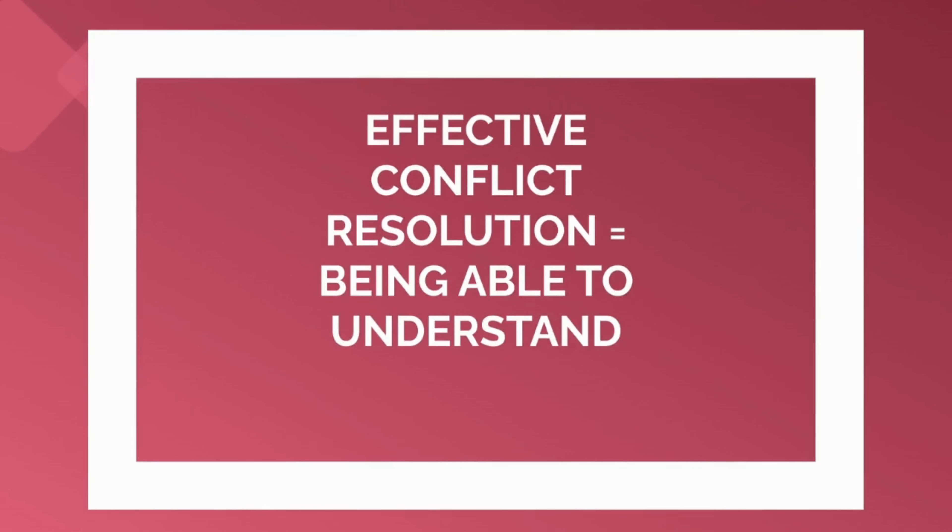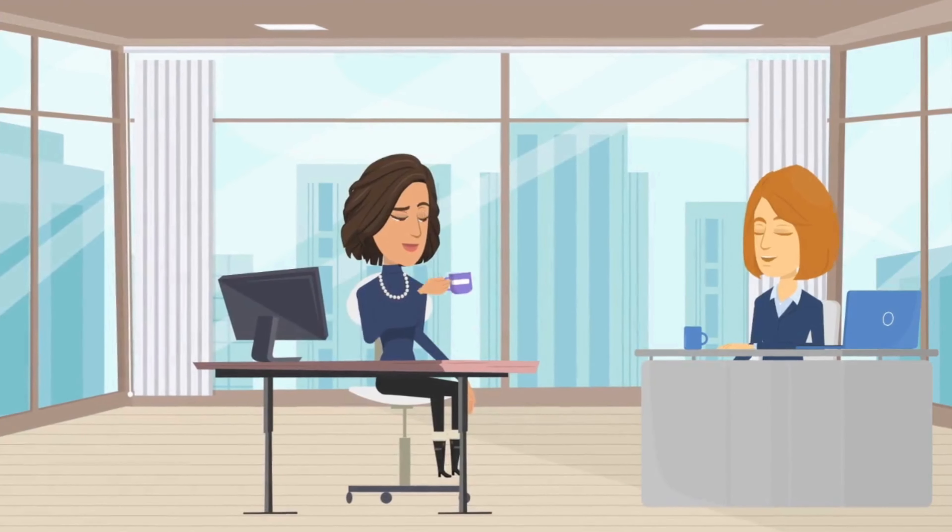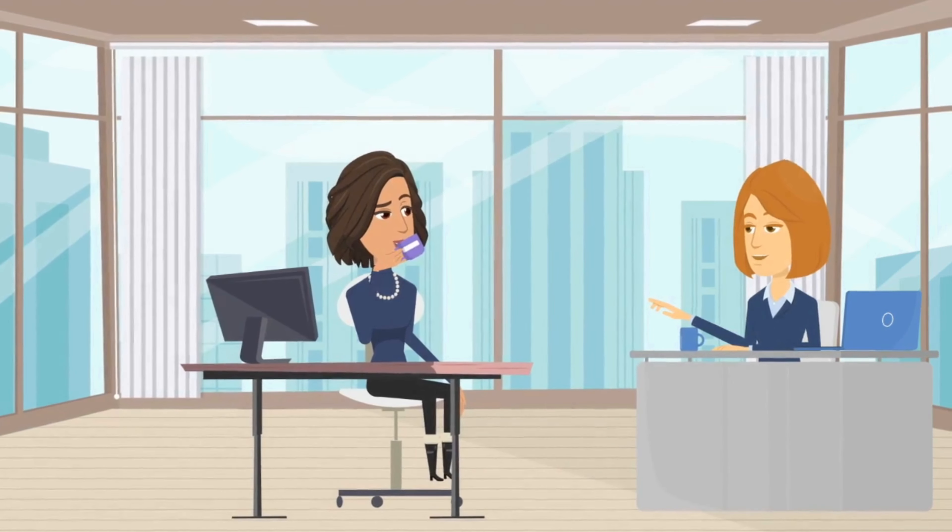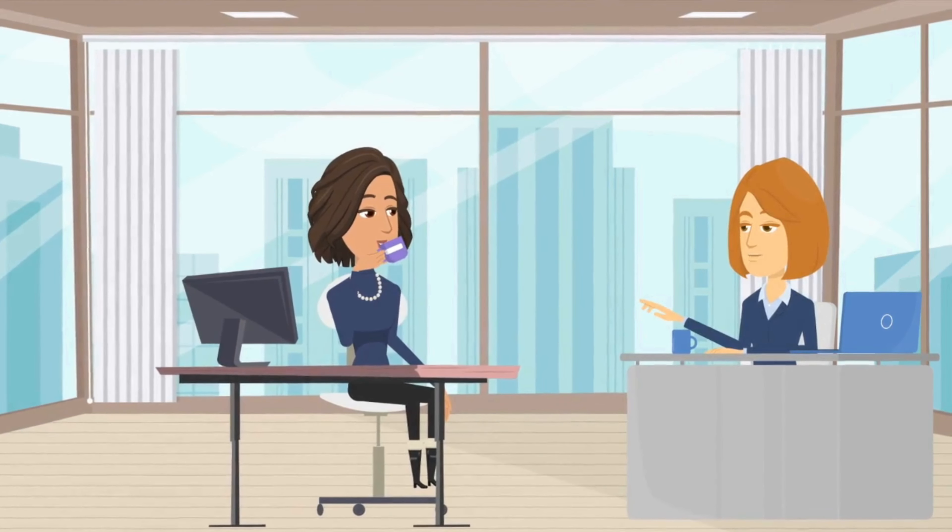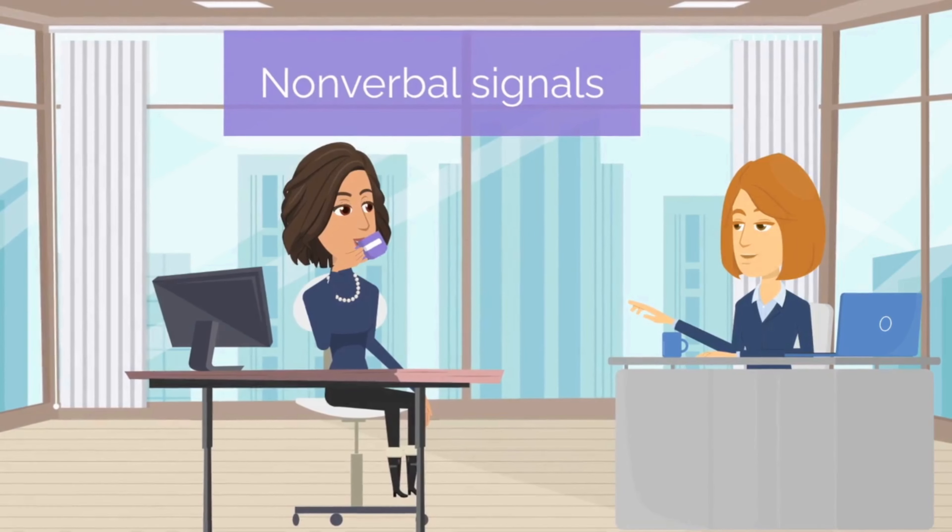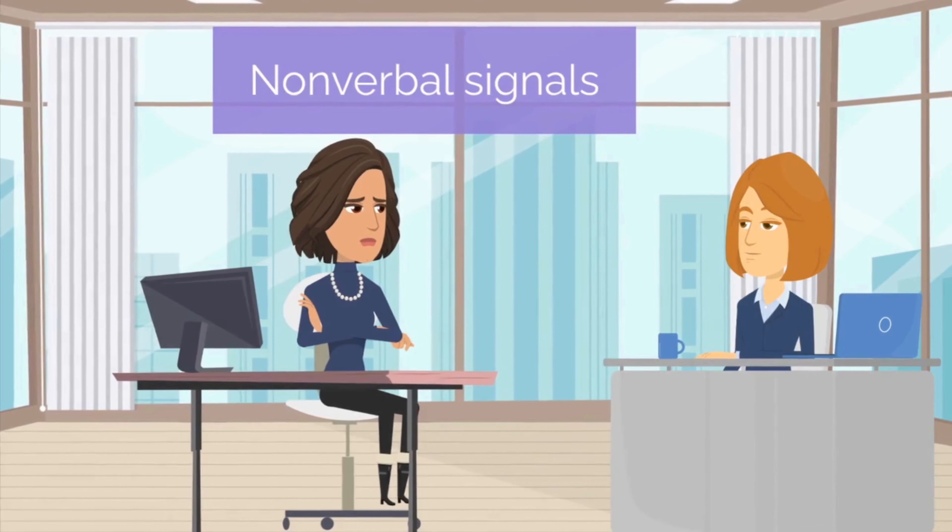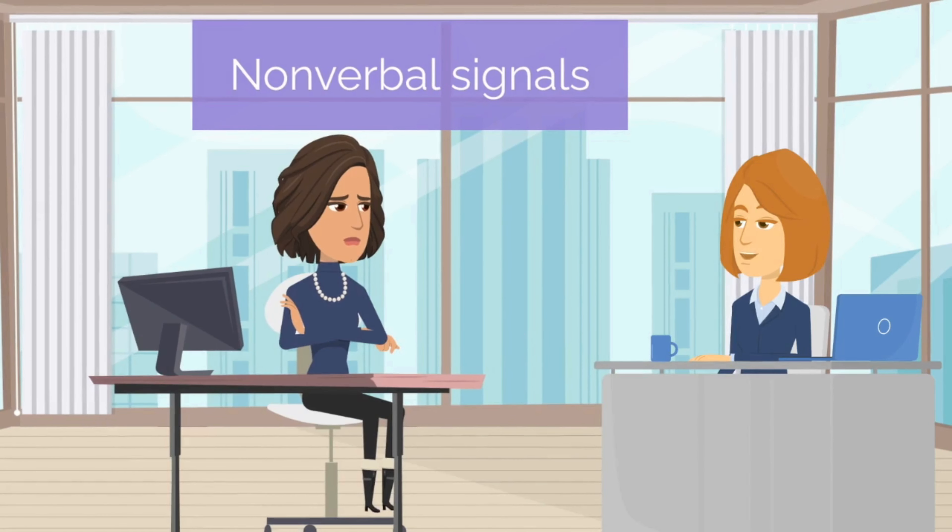Another crucial element to effective conflict resolution is being able to pick up what isn't being said. When people are in the middle of conflict, the words they use are not the only way to convey the issues at the heart of the problem. Paying close attention to the other person's non-verbal signals can help you figure out what they are really saying, so you can respond in a way that builds trust and gets to the root of the issue.